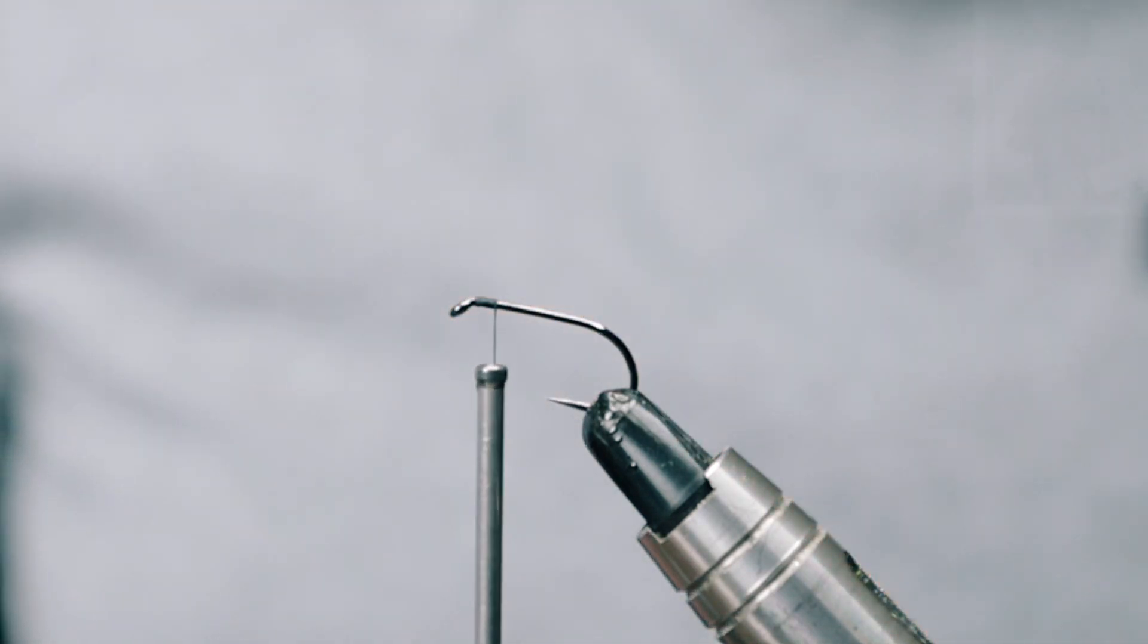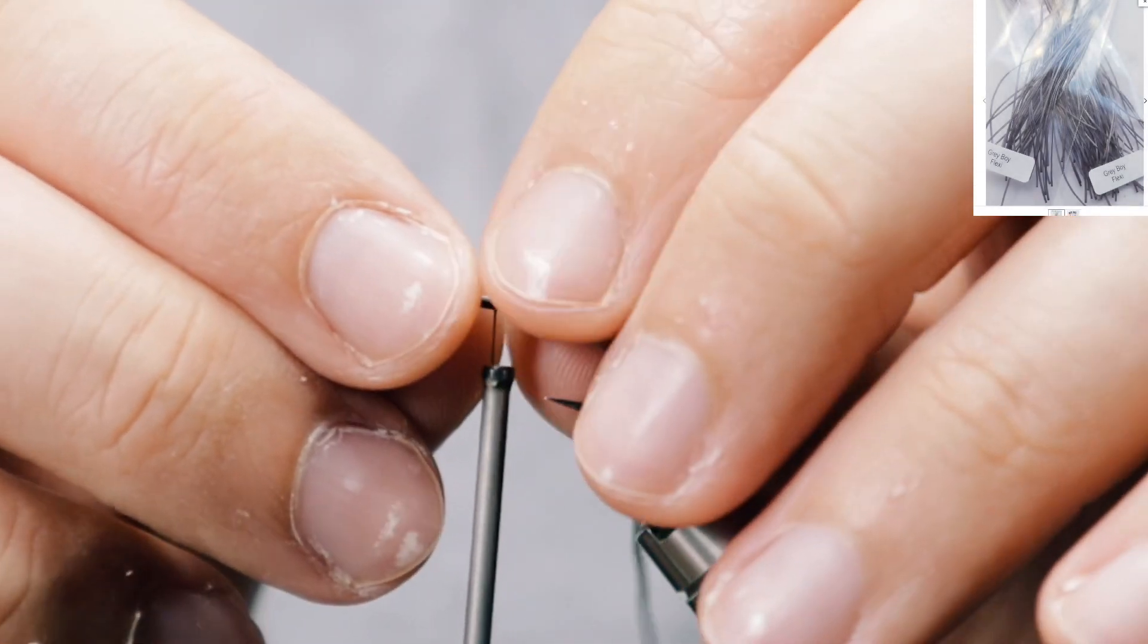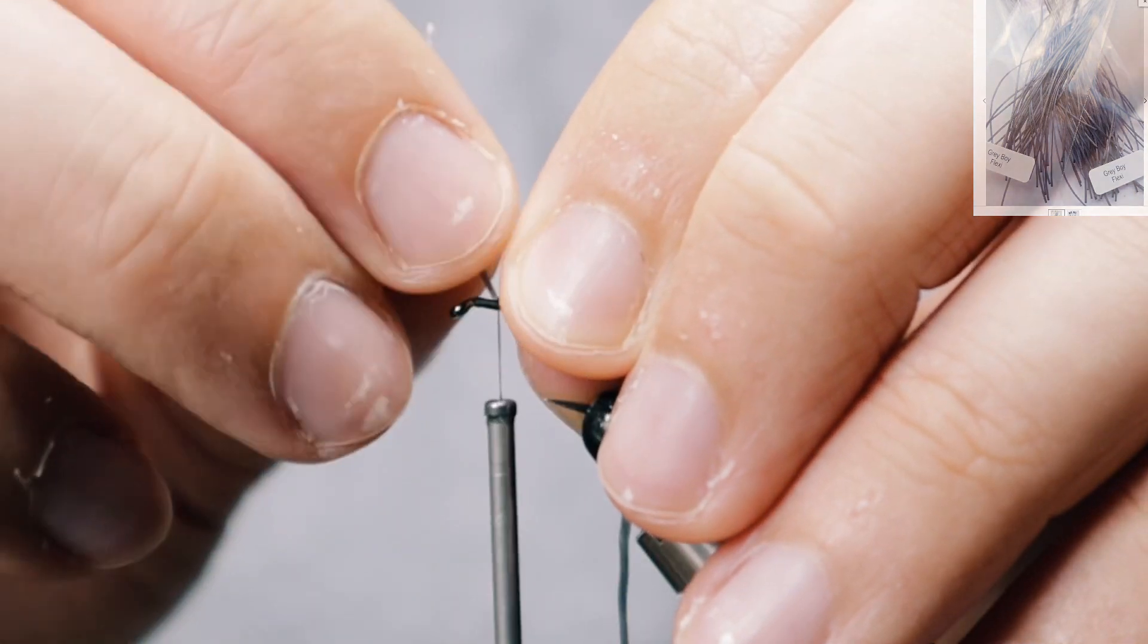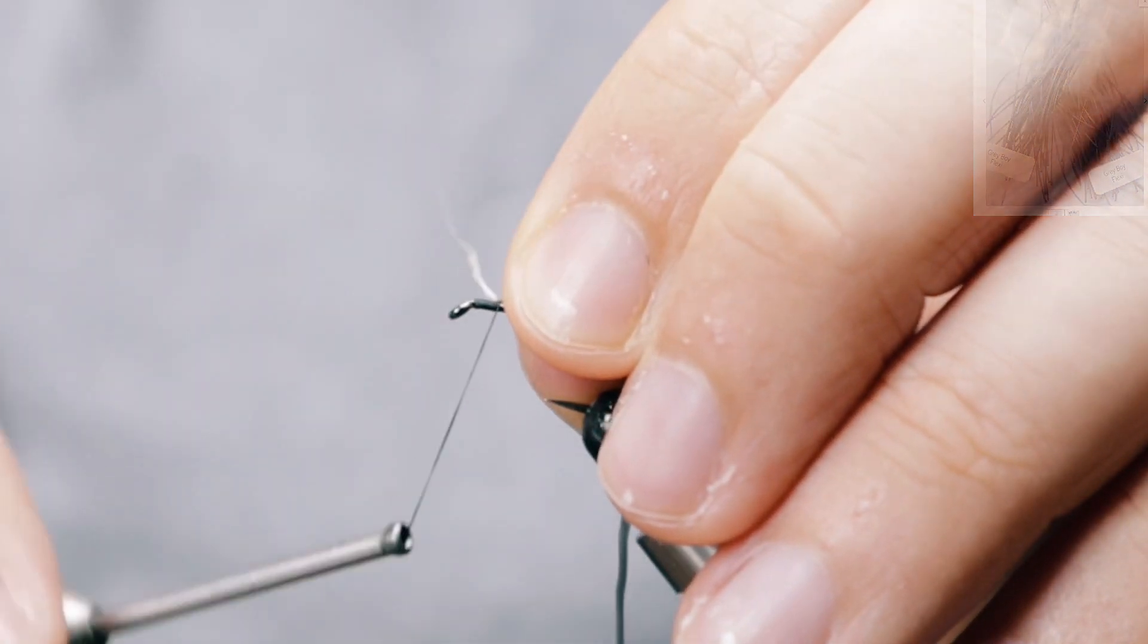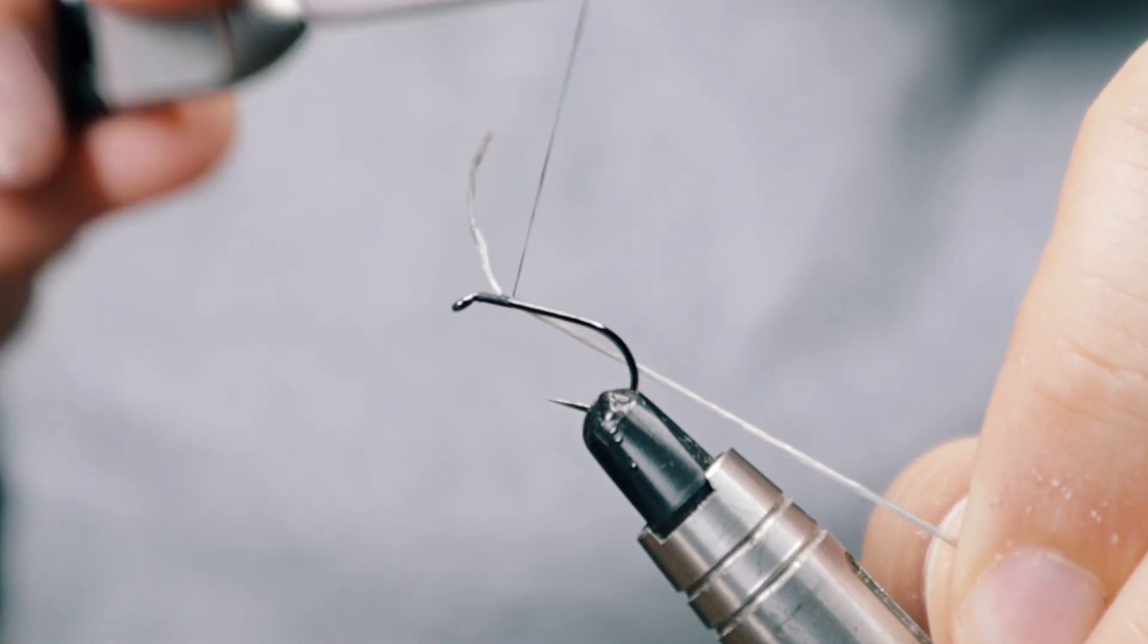Then got some gray flexi floss, which I can reduce the size of because it's too big. I'm just going to catch this on the side at this point, come around with two turns, pull this nice and tight.